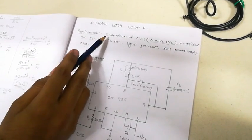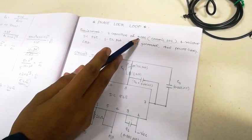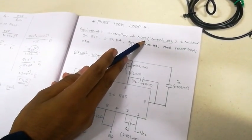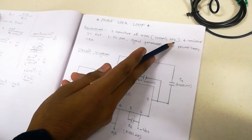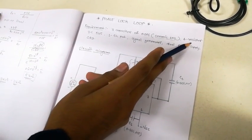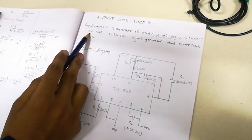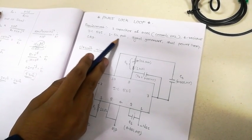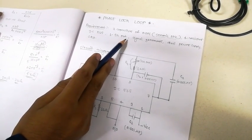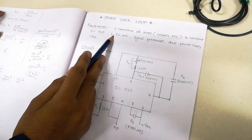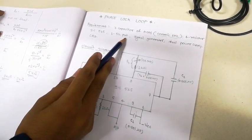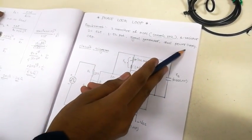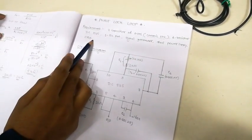For this you need 3 capacitors of 0.001 microfarad, that is the ceramic 102, resistor IC 565, 1 5k pot or you can use a 10k pot, a signal generator, dual power supply, and CRO.